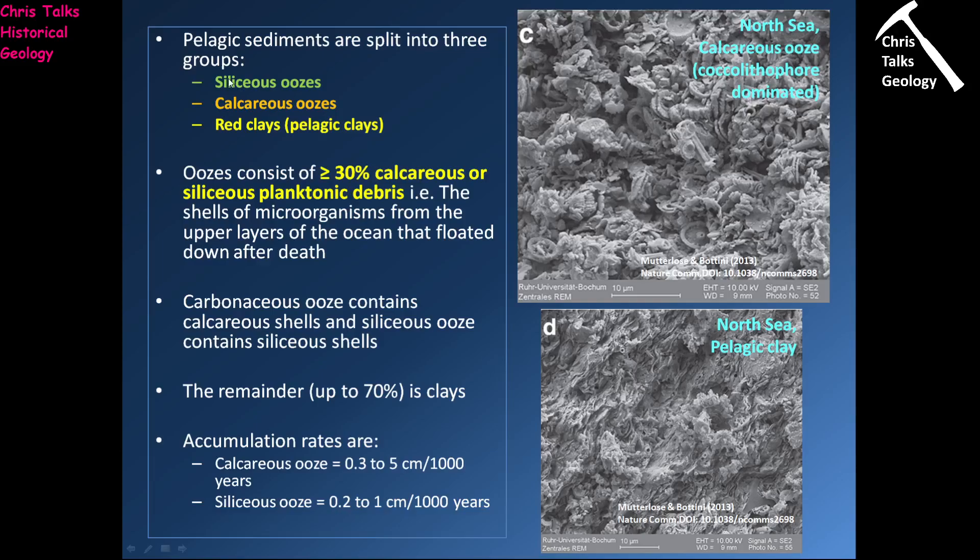Calcareous oozes contain calcareous shells — calcium carbonate shells — and siliceous oozes contain siliceous shells. It depends on what type of organism dominates in that environment. If diatoms dominate — diatoms have shells made of silica, SiO₂ — you're going to get a siliceous ooze, if they're present in large enough quantities. On the other hand, if you have foraminifera, which tend to have shells made of calcium carbonate, and they're present in large quantities, you're going to get a calcareous ooze.